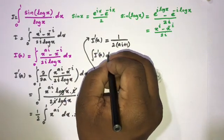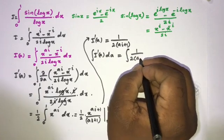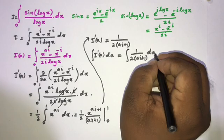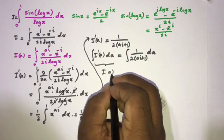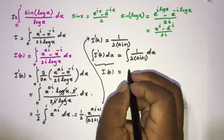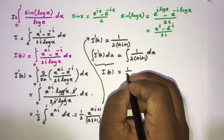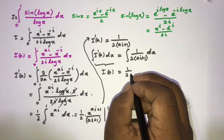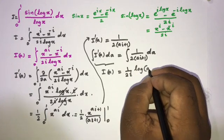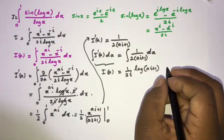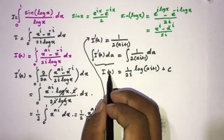Now I am going to integrate I'(a) with respect to a. The integral of 1 over 2(ai + 1) with respect to a gives I(a) equals 1 over 2i times natural log of ai plus 1 plus C.